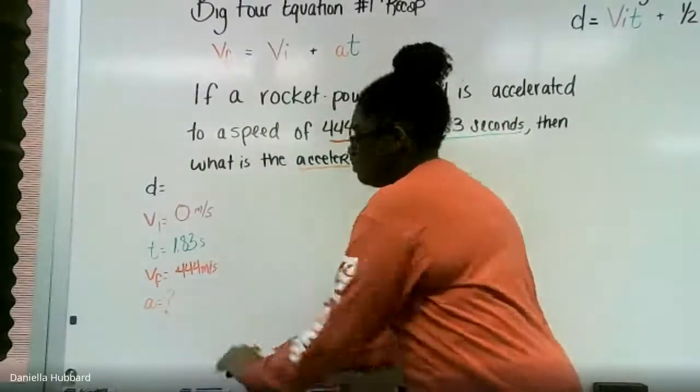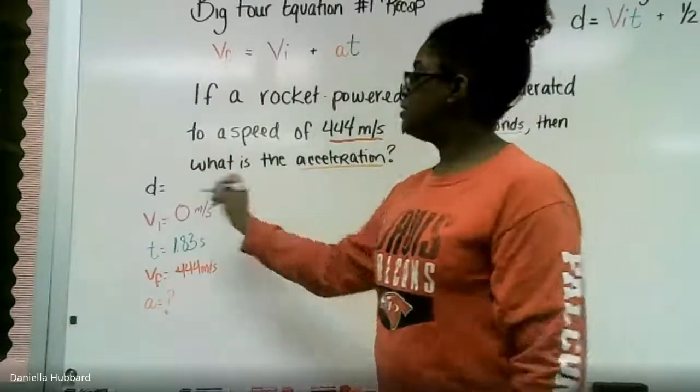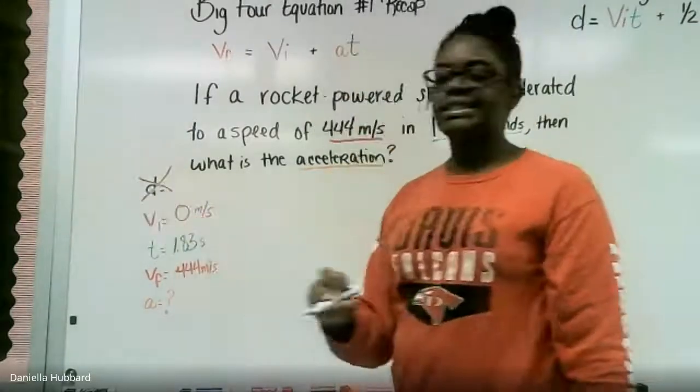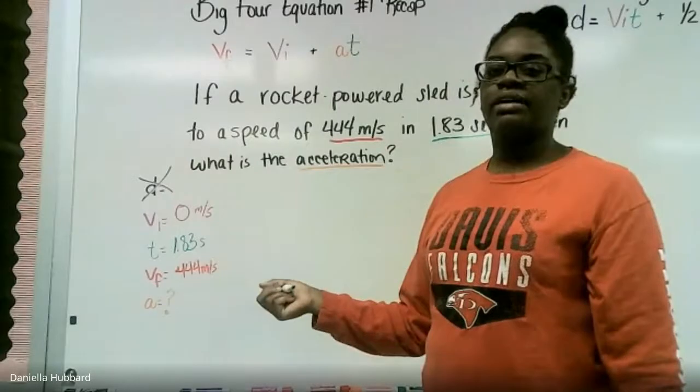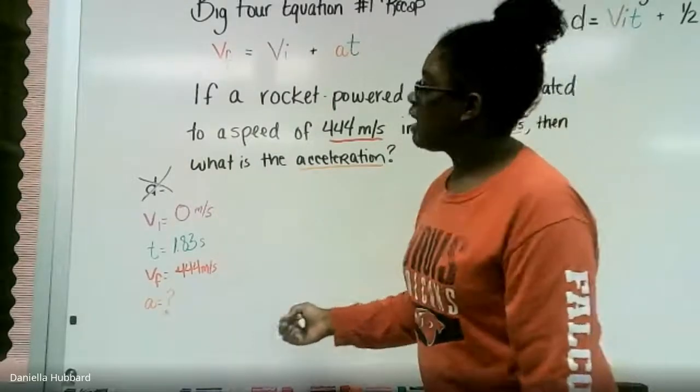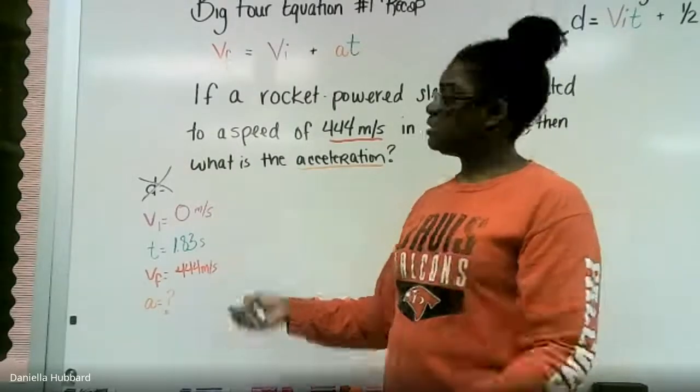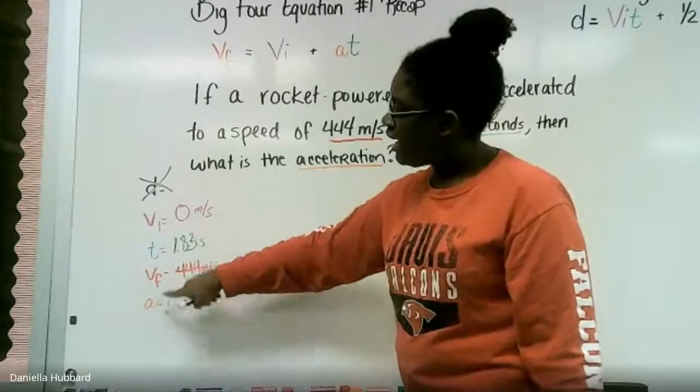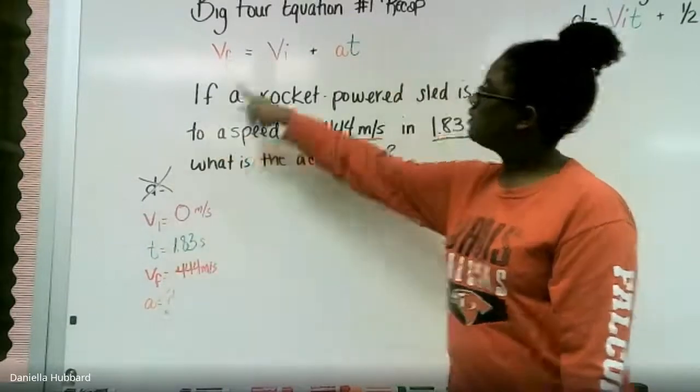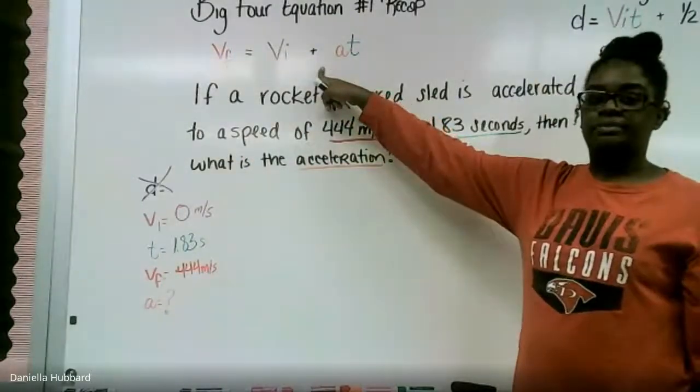So we have the information in for each variable, we have the question mark for acceleration, but we don't have anything for distance, so that means we're not going to use distance in our equation. So out of the four big equations, the only equation that has these four variables is equation number one.